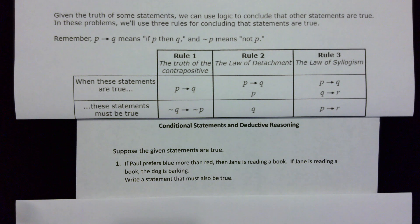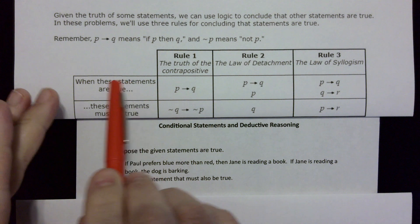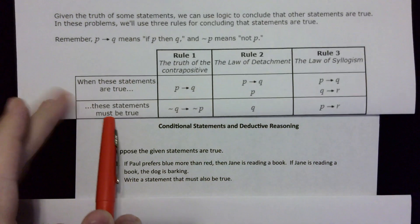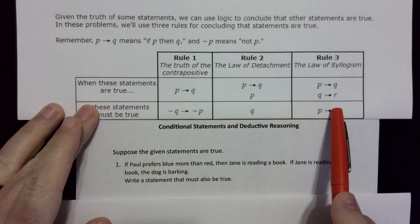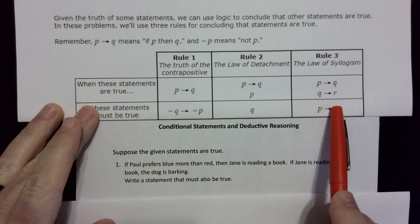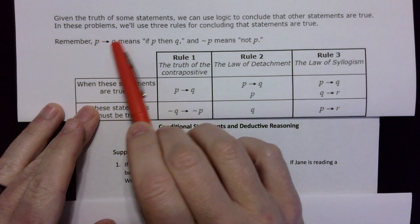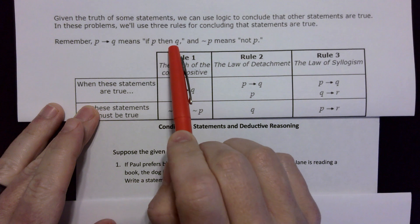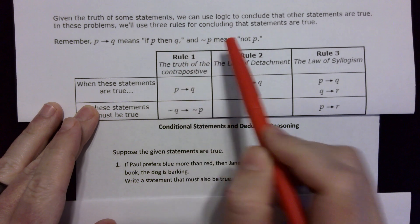In this video we're going to be talking about conditional statements and deductive reasoning. To start off, let's talk about these three rules — when these statements are true, these statements must also be true. Recall that the notation with a little arrow between means 'if P then Q,' and if it's got a little tilde in front, that means 'not P.'